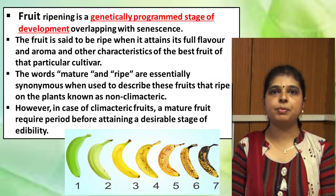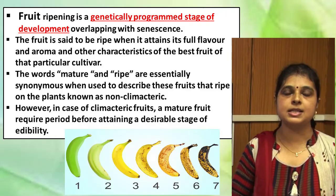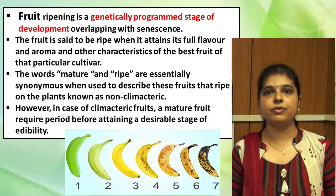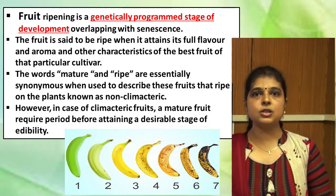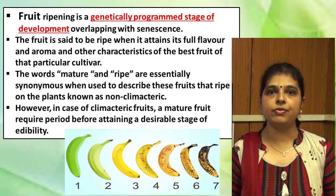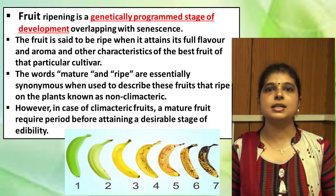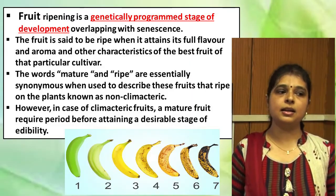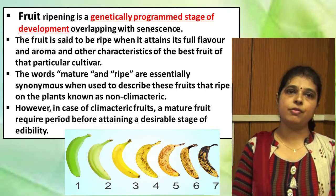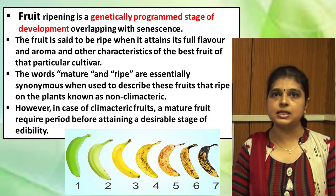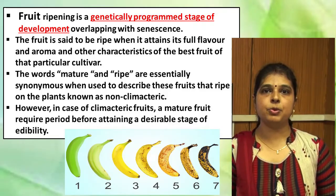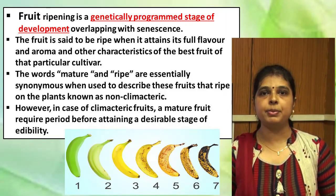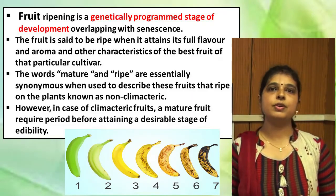As we all know, fruit ripening — this word you have all heard. Just as in human beings there are different phases like juvenile phase, young phase, maturity phase, old phase, then death, similarly in plants also there are different phases: juvenile phase, vegetative phase, reproductive phase, senescence, and then finally death. Fruit ripening is a genetically programmed stage of development overlapping with the senescence process.